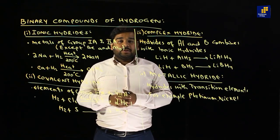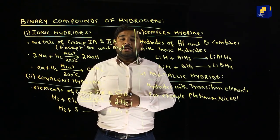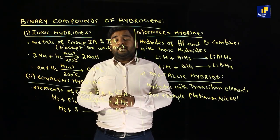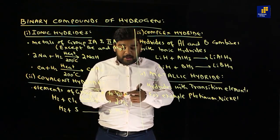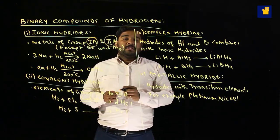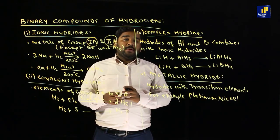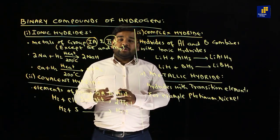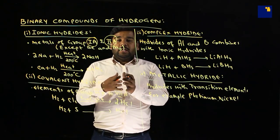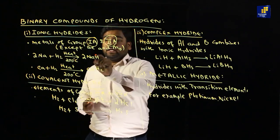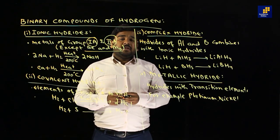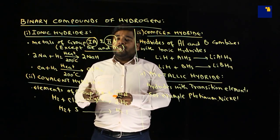इस वक्त हम board पर चार binary compounds देखेंगे। सबसे पहला binary compound है: ionic hydride — यह वो binary compound of hydrogen है जो ionic bond form करता है। यह bond करता है group 1A और 2A के members के साथ। 1A और 2A के members hydrogen को electron lose करते हैं, और hydrogen जो इनसे compound बनाता है उसे ionic hydride कहते हैं — with exception of beryllium and magnesium।